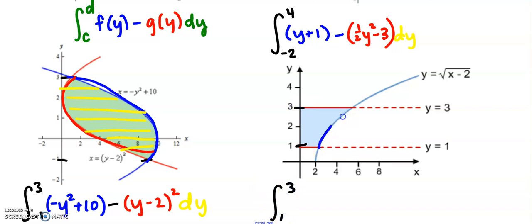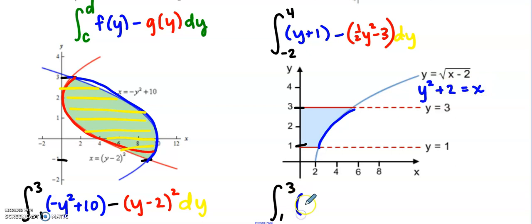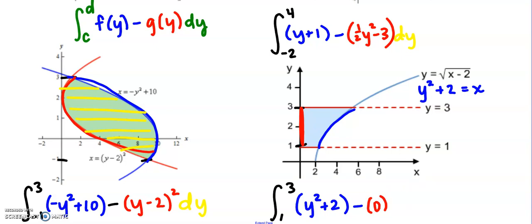For the last setup, integrating from y = 1 to y = 3: the right curve is y = √(x - 2), but we can't have x's, so we square both sides and add 2, giving x = y² + 2. So the right curve is y² + 2 minus the left curve, which is just zero — the line x = 0. All of this is painted with respect to the y-axis, so everything is in terms of y.